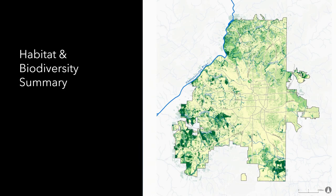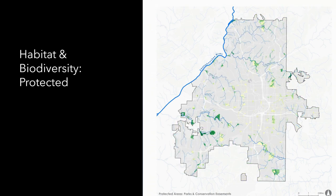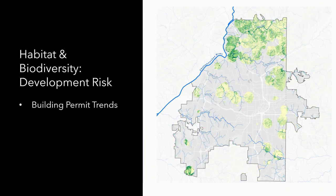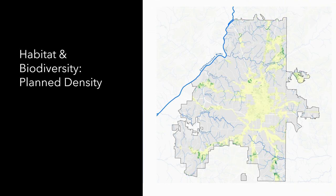We then looked at which areas of high habitat value are currently protected — either in parks or conservation easements — revealing important large patches, particularly in the southern part of the city, but also a significant amount of high biodiversity area outside of any direct protection. We also analyzed building permit densities and trends to understand what areas of habitat and biodiversity are at greatest threat from future development — and looked at where the city is planning development cores and corridors to understand ecological tension and conflict.